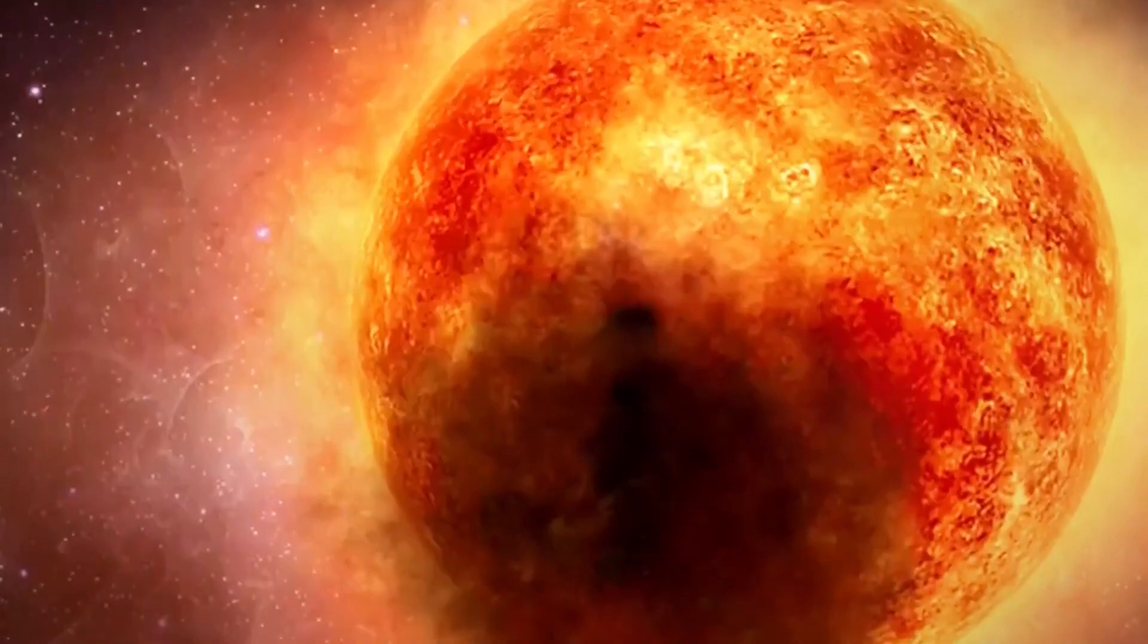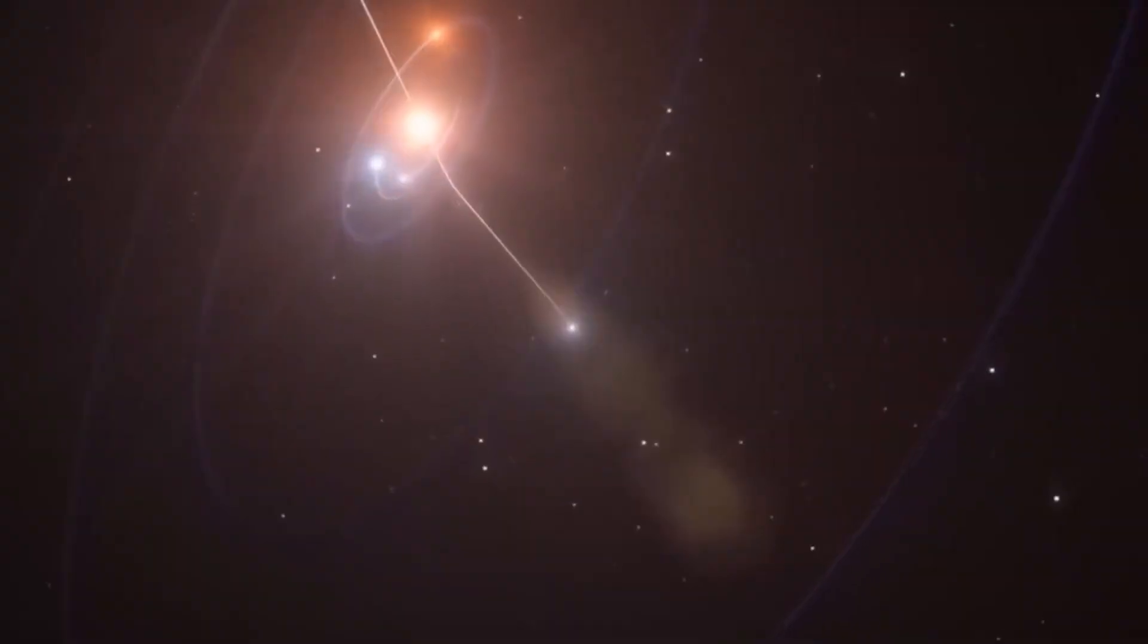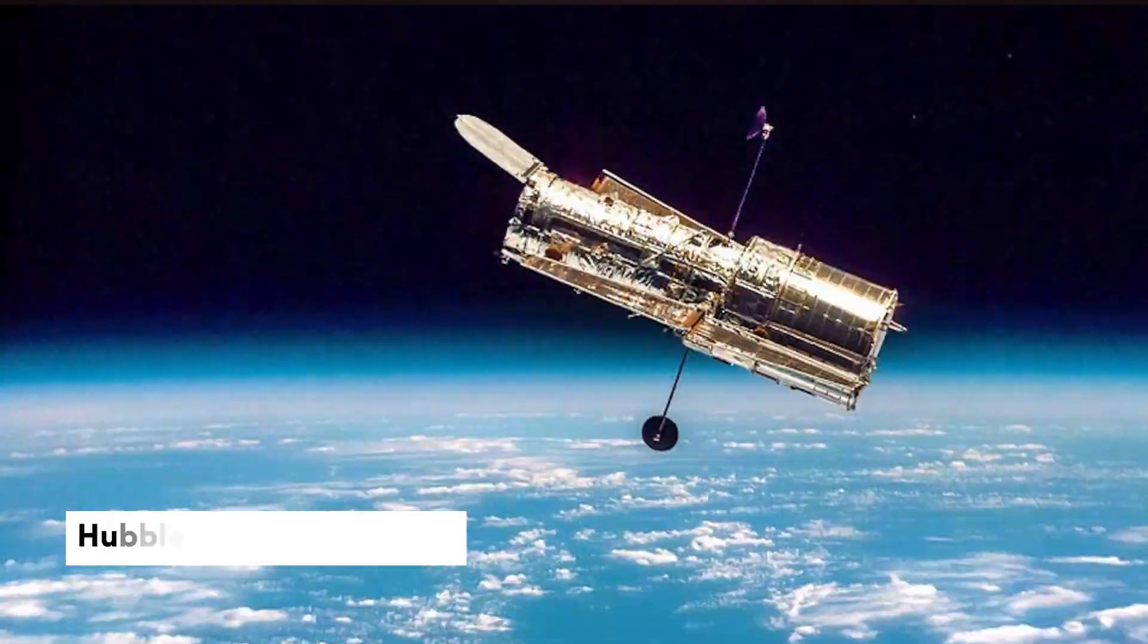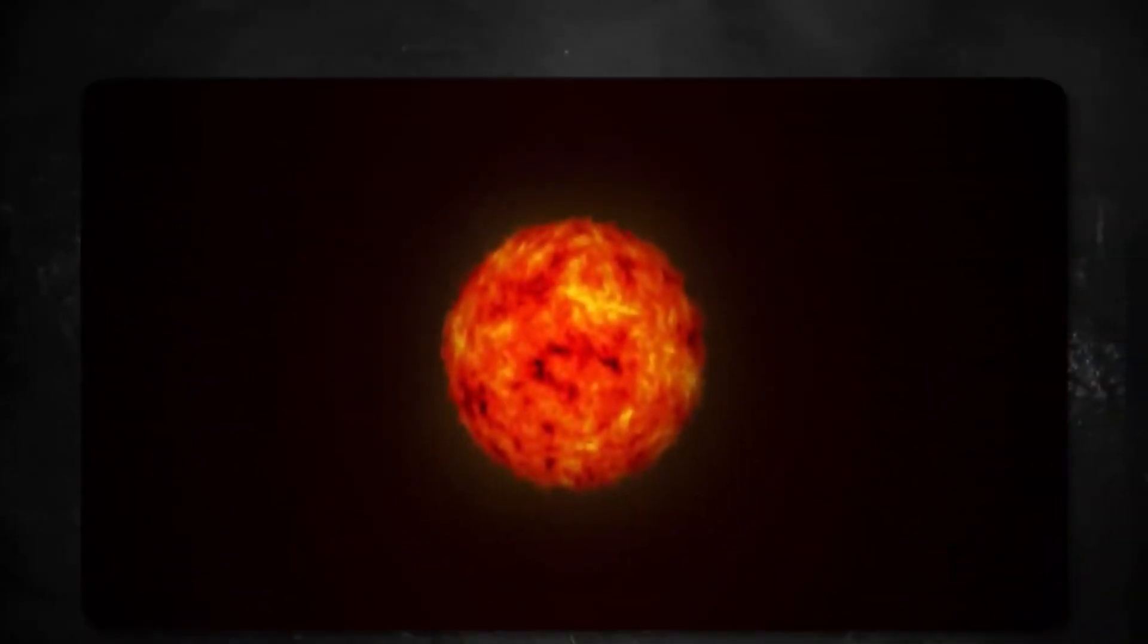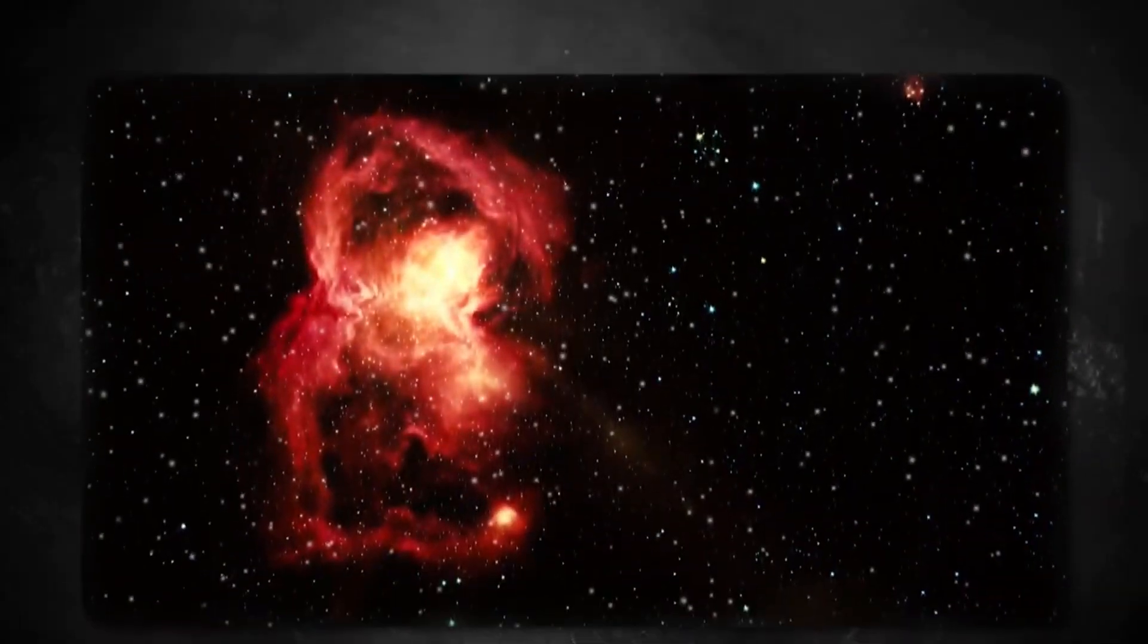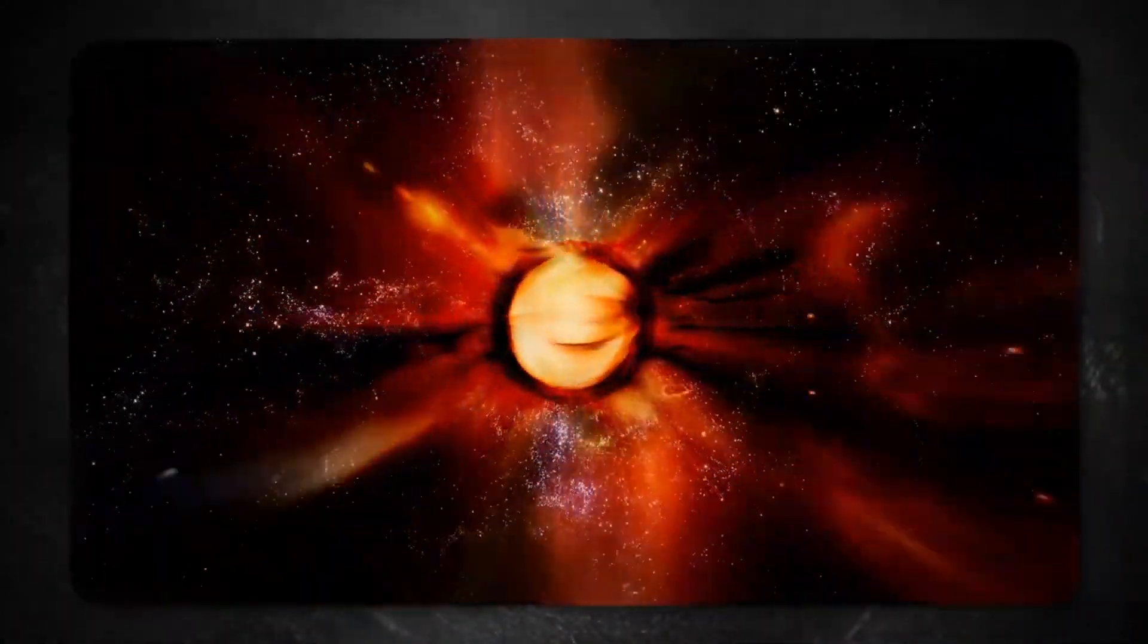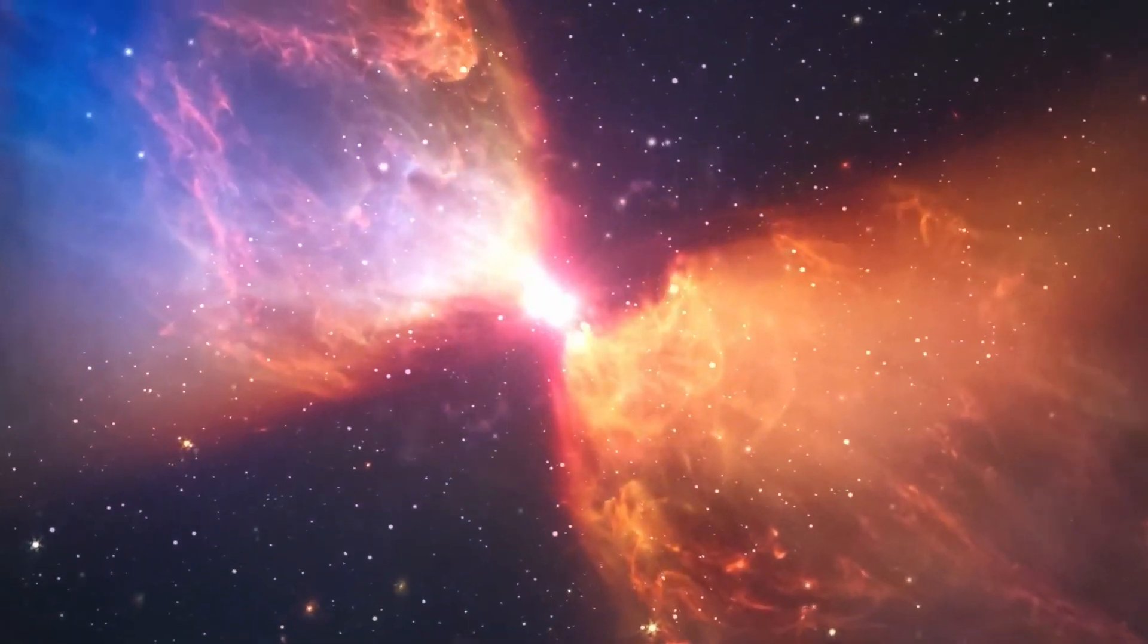By studying the light Betelgeuse gives off, scientists have learned a lot about it, such as its size, makeup, and temperature. The Hubble Space Telescope has even taken clear pictures of Betelgeuse's surface, which show complex patterns of gas and dust. Scientists can use these pictures to make models of the star's behavior and guess how it will change in the future.